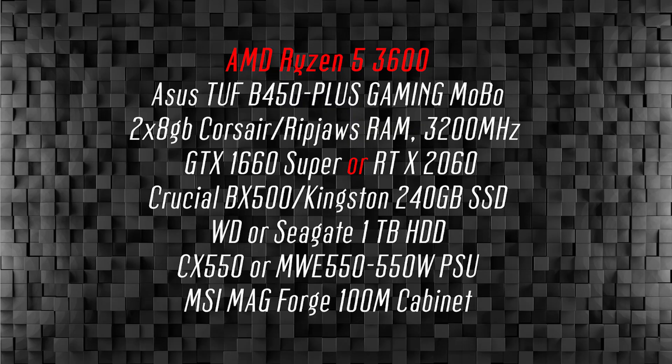Overall, the best all-rounder processor is the Ryzen 5 3600. For a 65,000 to 75,000 Rs. PC build, the Ryzen 5 3600 is the first processor recommendation — the best all-rounder processor.